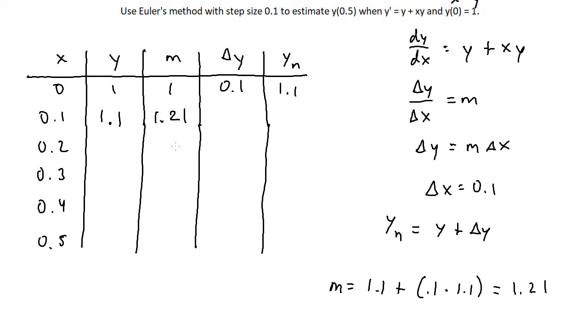Then delta y is going to be equal to the slope times delta x. Once again, delta x is still 0.1, and keep in mind that with most Euler's method problems, you can usually use a calculator, so it makes stuff much easier. Delta y is going to be 1.21, our slope, times delta x, and delta x once again is 0.1. So we just move a decimal place back, and that will give us 0.121.